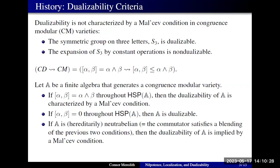Something that is still rather mysterious is what happens when you have non-abelian solvable congruences — what happens when the commutator isn't immediately zero, but reaches zero after some number of steps. To answer this question, we need to know what solvability even is, and it turns out that there is not just a single notion of solvability, and not just a single notion of nilpotence, for general algebras.